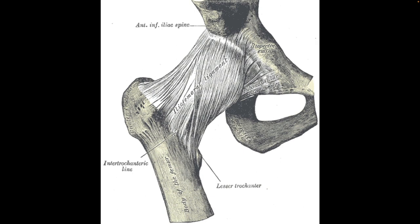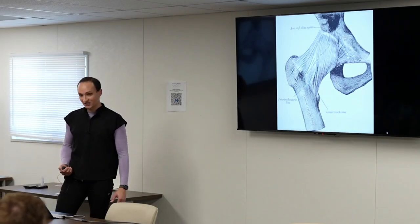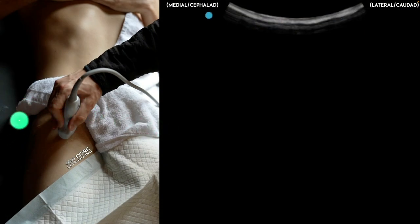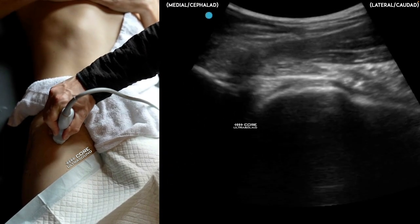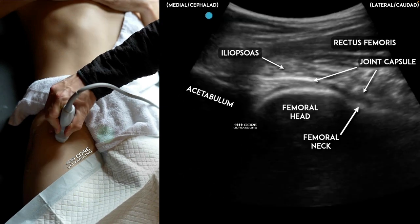Moving on to hip. The hip capsule extends from the acetabulum all the way to the greater trochanter, so it's not just the femoral head we're looking at — we need to look at the entire neck. Your probe placement is tilted to follow the angle of the femoral neck, not straight up and down. I like the curvilinear transducer here because it's usually deeper. Track the femur up, and then tilt the transducer to visualize the head and neck. Remember there's normally a small amount of fluid for joint lubrication — always compare the contralateral side.